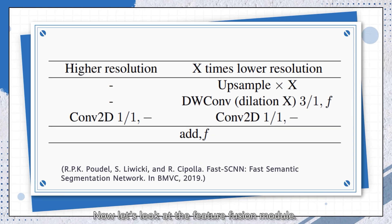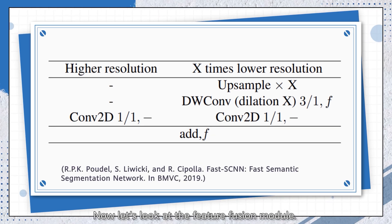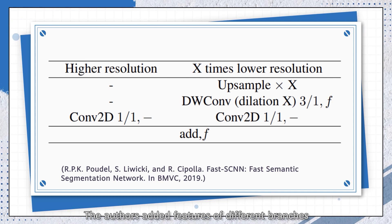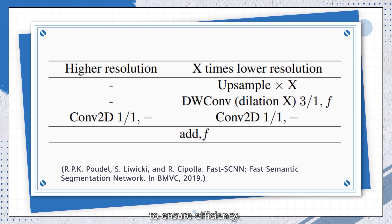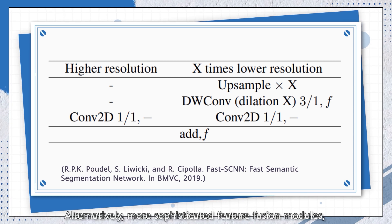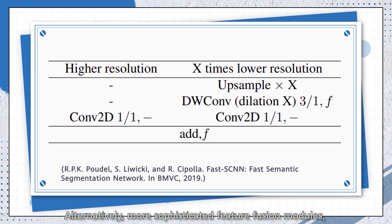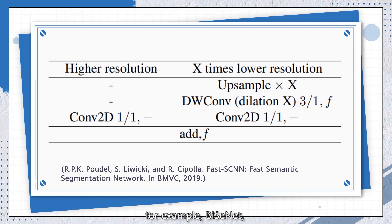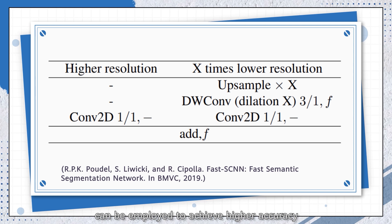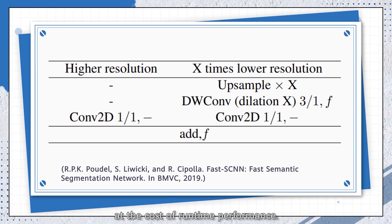Now let's look at the Feature Fusion module. The authors added features of different branches to ensure efficiency. Alternatively, more sophisticated Feature Fusion modules, for example BiSeNet, can be employed to achieve higher accuracy at the cost of runtime performance.